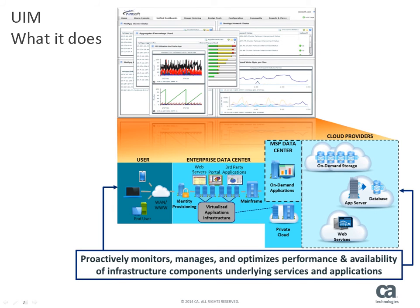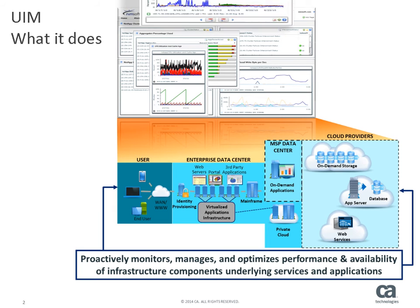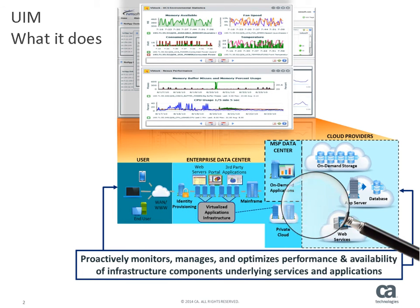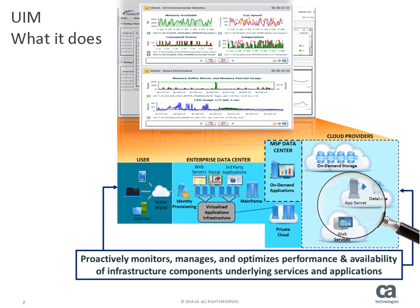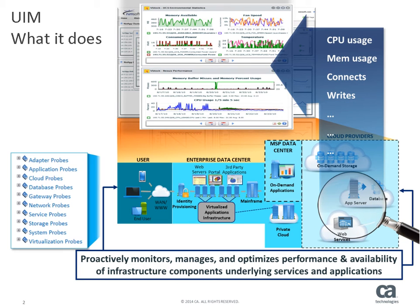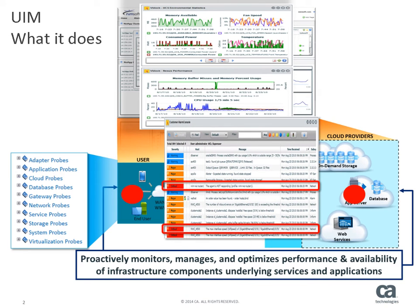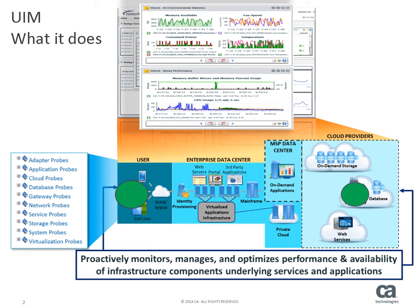CA Unified Infrastructure Management, or UIM, is a software application that proactively monitors, manages, and optimizes the performance and availability of the common components comprising the technical infrastructure underlying the delivery of services and applications. It provides alerts when the performance of critical components deviates from defined performance indicators, so that performance can be immediately restored to defined service levels before impacting the quality of services delivered to users.